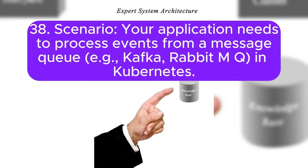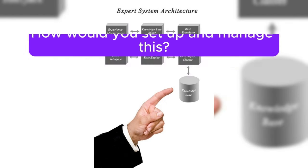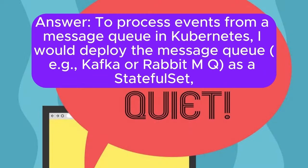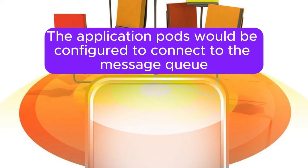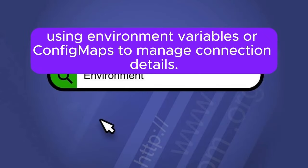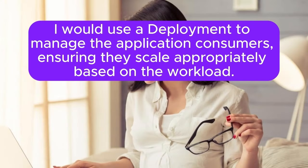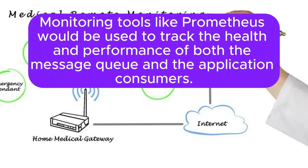Scenario 38: Your application needs to process events from a message queue, for example Kafka or RabbitMQ, in Kubernetes. How would you set up and manage this? Answer: To process events from a message queue in Kubernetes, I would deploy the message queue, for example Kafka or RabbitMQ, as a StatefulSet, ensuring it has the required persistent storage and stable network identity. The application pods would be configured to connect to the message queue using environment variables or ConfigMaps to manage connection details. I would use a deployment to manage the application consumers, ensuring they scale appropriately based on the workload. Monitoring tools like Prometheus would be used to track the health and performance of both the message queue and the application consumers.